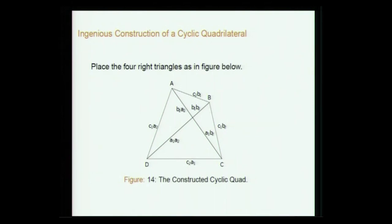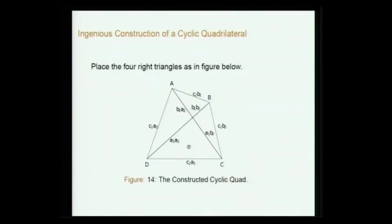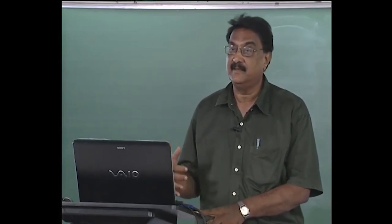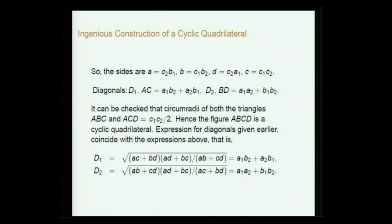The sides are c2·b1, c1·b2, and the other sides are c2·a1, c1·a2. The diagonals are a1·b2 + a2·b1. This construction also gives the parts of the diagonal, and one can check that the circumradius of both triangles ABC and ABD equals c1·c2/2. Since it is a cyclic quadrilateral, the circumradii of the two triangles involved must be equal — and that is guaranteed. So the figure is indeed a cyclic quadrilateral.